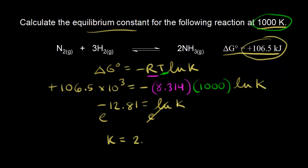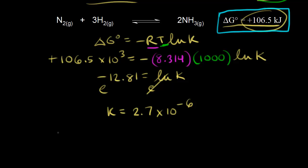E to the negative 12.81 equals 2.7 times 10 to the negative 6. So the equilibrium constant K equals 2.7 times 10 to the negative 6. When delta G zero is positive (greater than zero), the equilibrium constant K is less than one. That means at equilibrium, the reactants are favored — the equilibrium mixture contains more reactants than products.